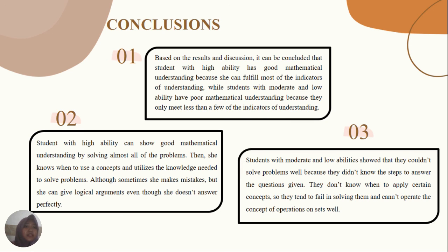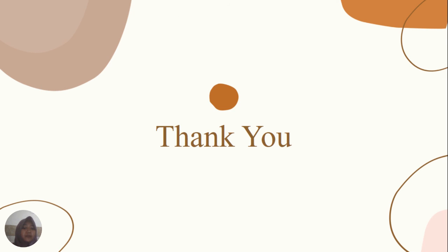In conclusion, based on the results and discussion, a student with high ability has good mathematical understanding because she can fulfill most of the indicators of understanding, while students with moderate and low ability have poor mathematical understanding because they only meet a few of the indicators of understanding. Thank you for your attention.